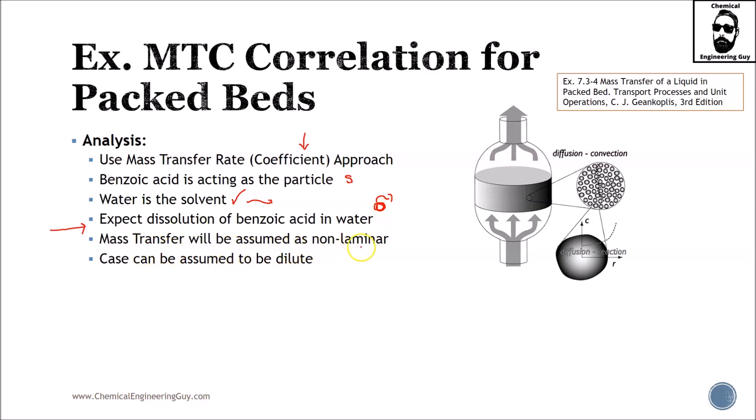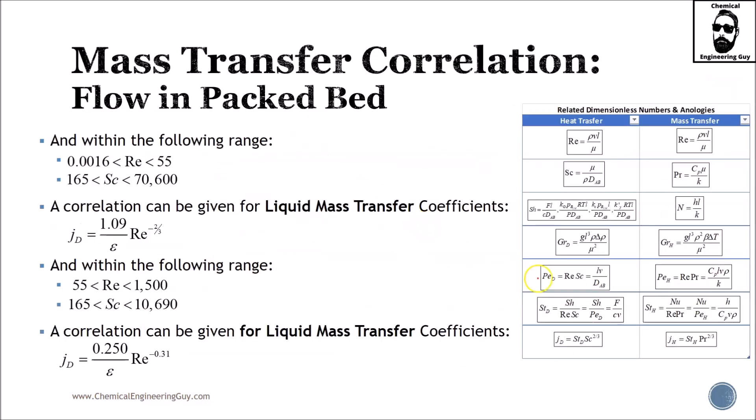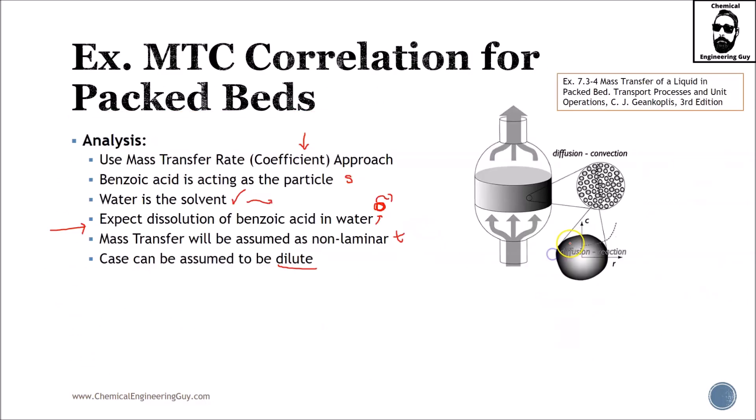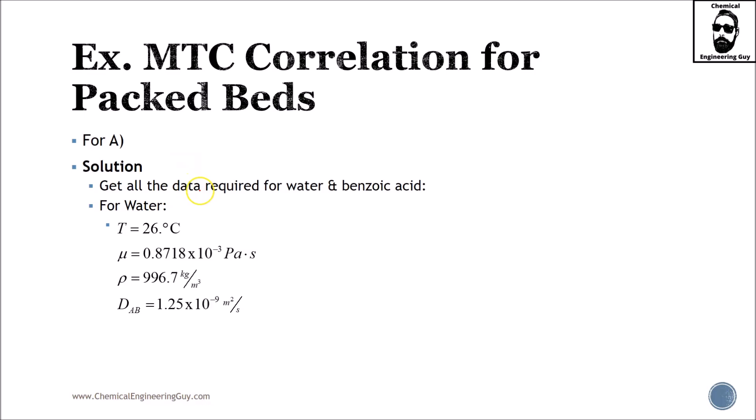Mass transfer will be assumed as non-laminar, so either turbulent or transitory. Case can be assumed to be dilute. Why dilute? Because as you can see here, this solubility is very low. Let us start with the correlation. Get all the data required for water and benzoic acid. So water, we have temperature, viscosities, densities, and diffusivity.